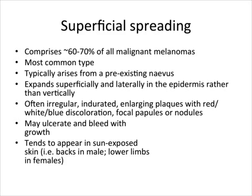Probably the most common type of malignant melanoma is the superficial spreading type. It tends to grow in a lateral fashion, staying within the epidermis rather than growing vertically and crossing the basement membrane into the dermis. As it grows in its irregular and indurated fashion, it may ulcerate and bleed. This lesion tends to present in white-skinned patients, relatively young, on an average age of 50 years old. It tends to grow on sun-exposed skin, such as the trunk and legs.